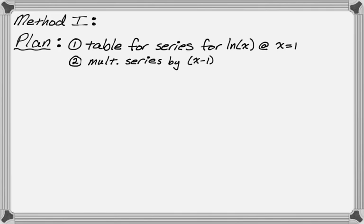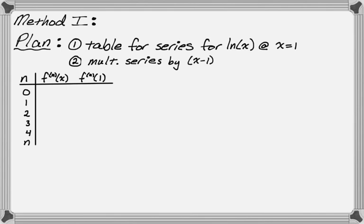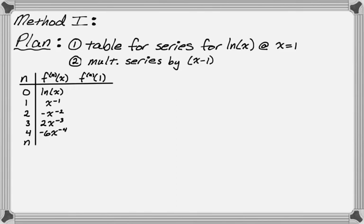I'm going to need a table. By the time I get to the fourth derivative, I'll be able to figure out a pattern. The zeroth derivative of our function is just natural log of x. The first derivative is 1 over x, which I'll write as x to the negative first. Then power ruling: negative x to the negative second, positive 2x to the negative third, and then negative 6x to the negative fourth.